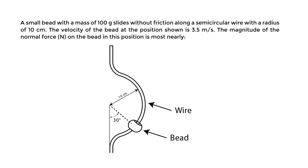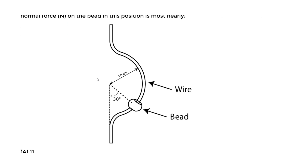We have another curvilinear motion example. A small bead with a mass of 100 grams slides without friction along a semicircular wire with a radius of 10 cm. The velocity of the bead at the position shown is 3.5 m/s. We need to find the magnitude of the normal force in newtons on the bead at this position.